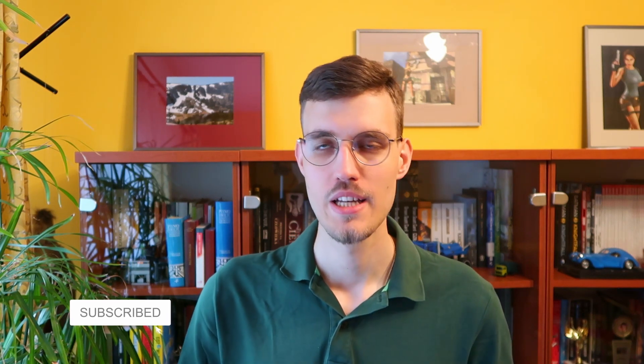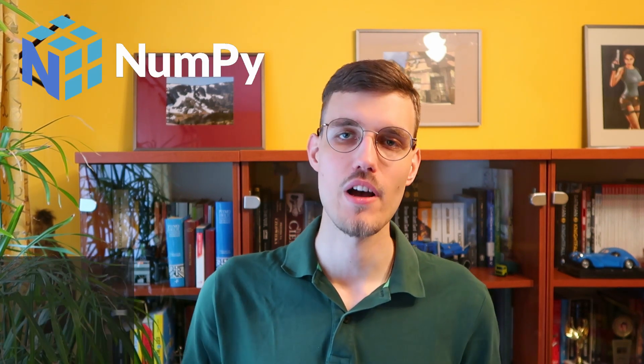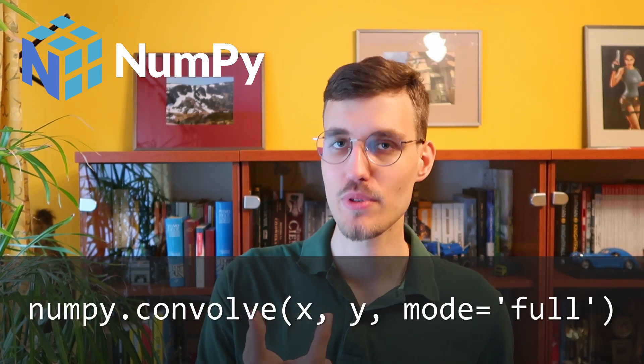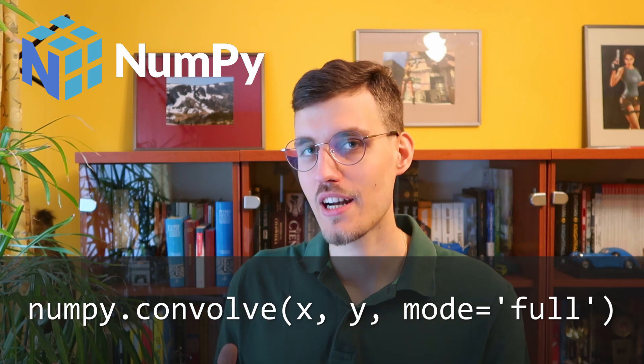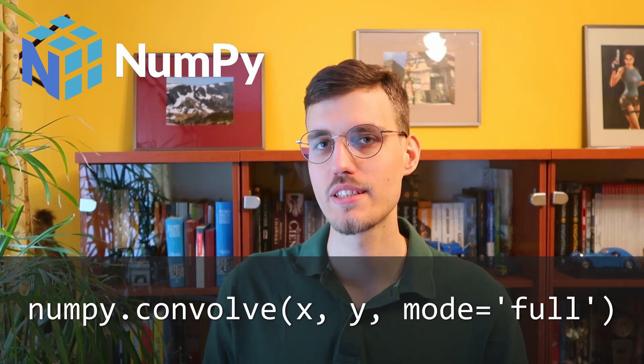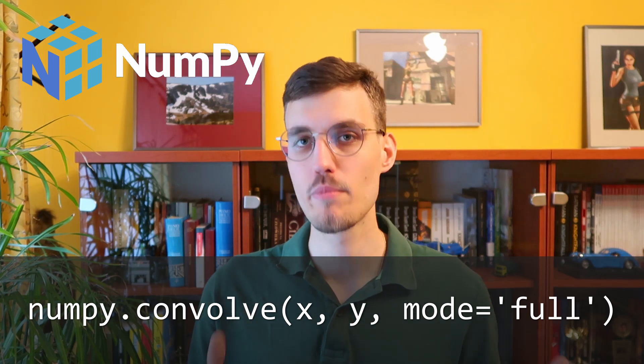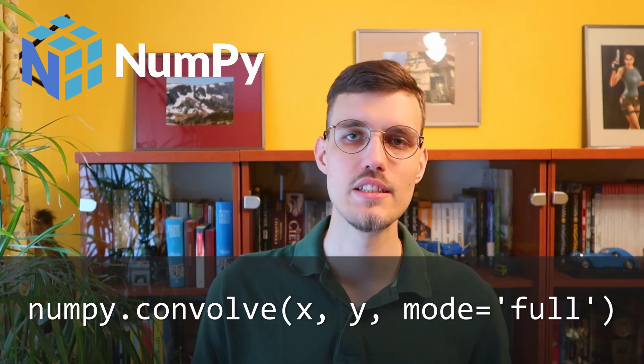Now that we understand the three modes of convolution, we may proceed to the functions in the numerical libraries used to compute convolution. In NumPy, we have the function numpy.convolve. It takes two input signals, and the third argument is a string representing the mode, which means full, valid, or same. The two input signals need to be 1D arrays.